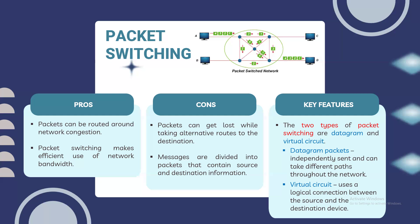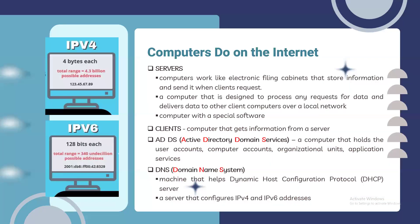What computers exist on the internet? First, we have servers — these work like electronic filing cabinets that store information. Clients are computers that get information from the servers. The client-server model, also called Active Directory Domain Services (ADDS), is a computer that holds user accounts, computer accounts, organizational units, and application services.